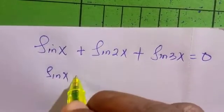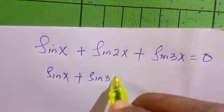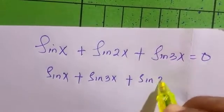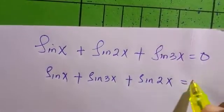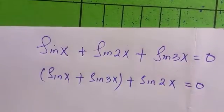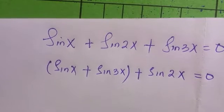What to do first? We rearrange by placing sin(3x) beside sin(x), so I'm going to have sin(x) + sin(3x) + sin(2x) = 0. By bracketing this, we're going to recall the sum of angles formula.